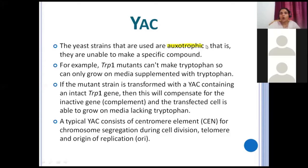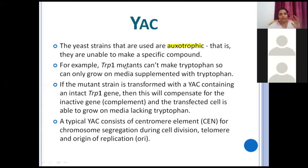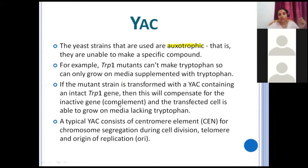The yeast strains used are auxotrophic — meaning they are unable to make a specific compound on their own. For example, trp1 mutants cannot make tryptophan, so they can only grow on media supplemented with tryptophan. Now, if the mutant strain is transformed with a YAC containing an intact tryptophan gene, this will compensate for the inactive gene and complement it. The transfected cell is then able to grow on media lacking tryptophan — the yeast cell with the YAC plasmid produces the nutrient and grows.